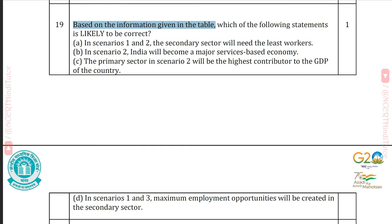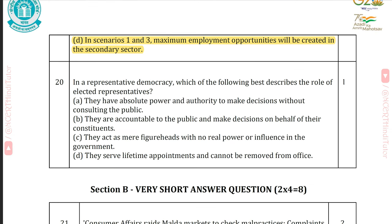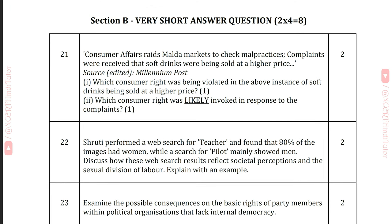Question 19: Based on the table, which statement is likely correct? Answer D: In scenarios 1 and 3, maximum employment opportunities will be created in the secondary sector. Question 20: In a representative democracy, which best describes the role of elected representatives? Answer B: They are accountable to the public and make decisions on behalf of their constituents. We have completed Section A. Let's move on to Section B — very short answer type questions carrying two marks each.